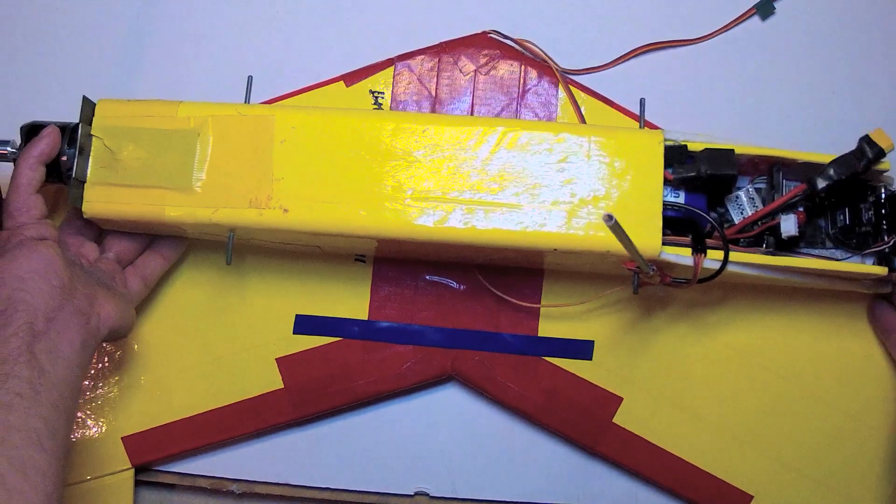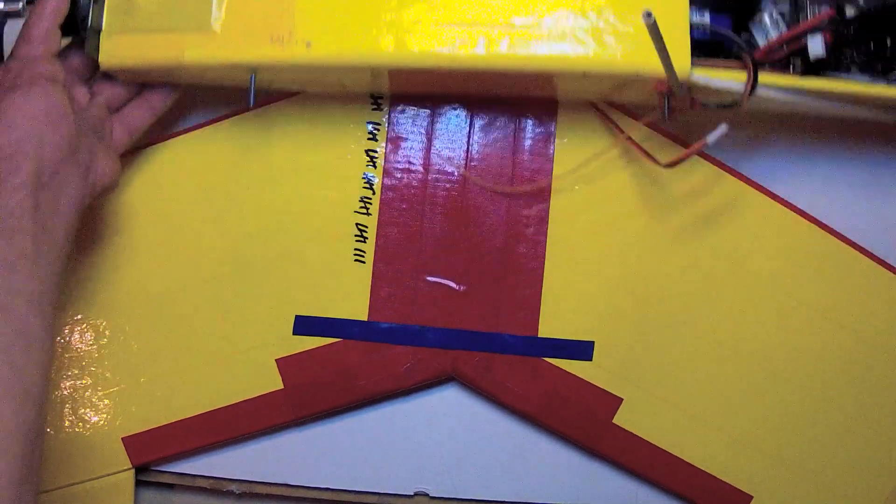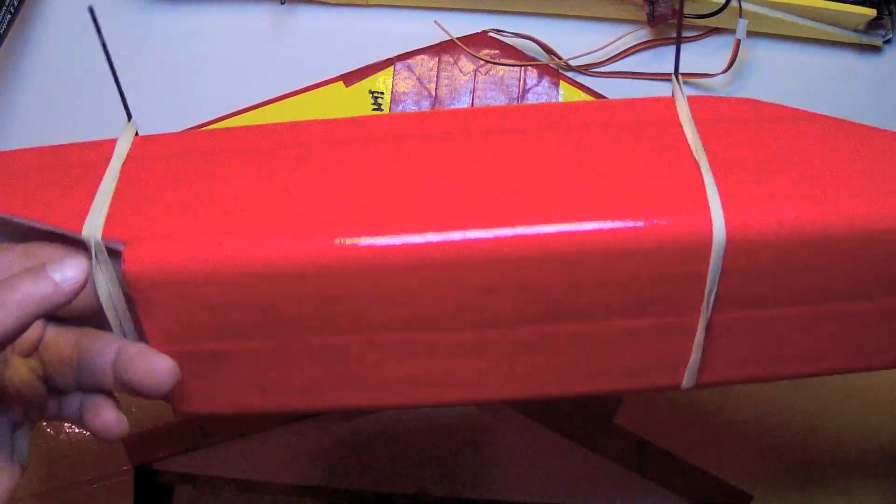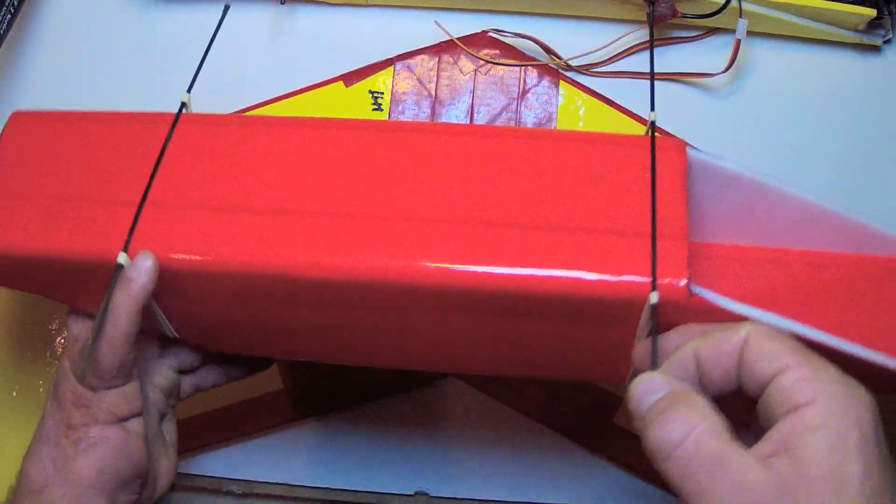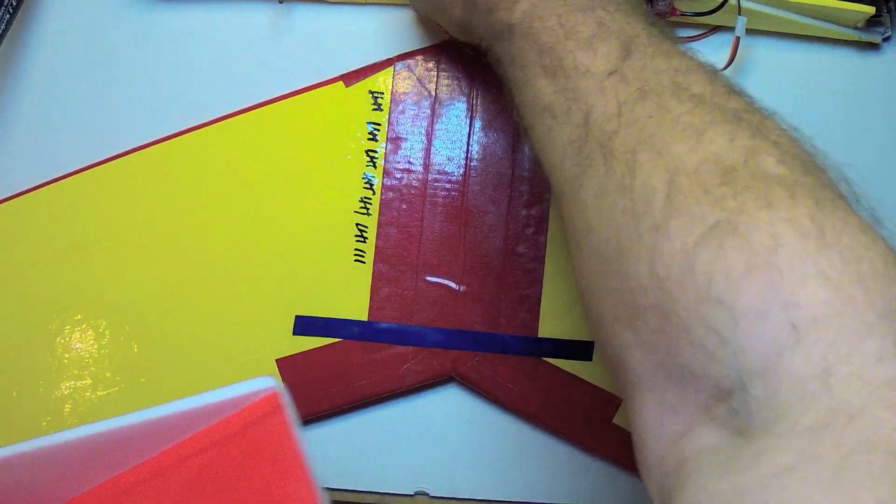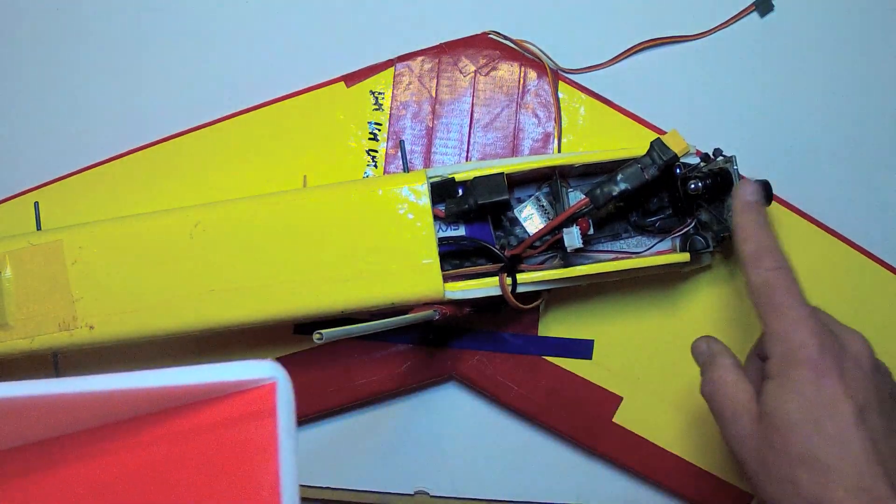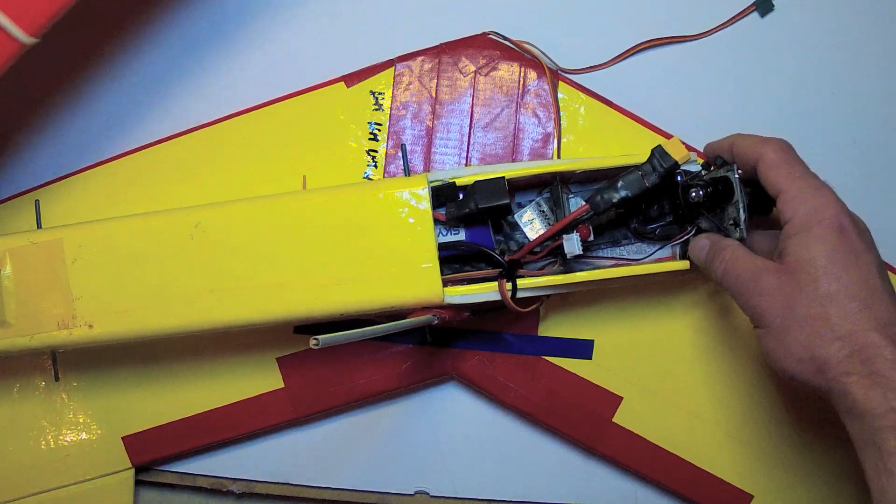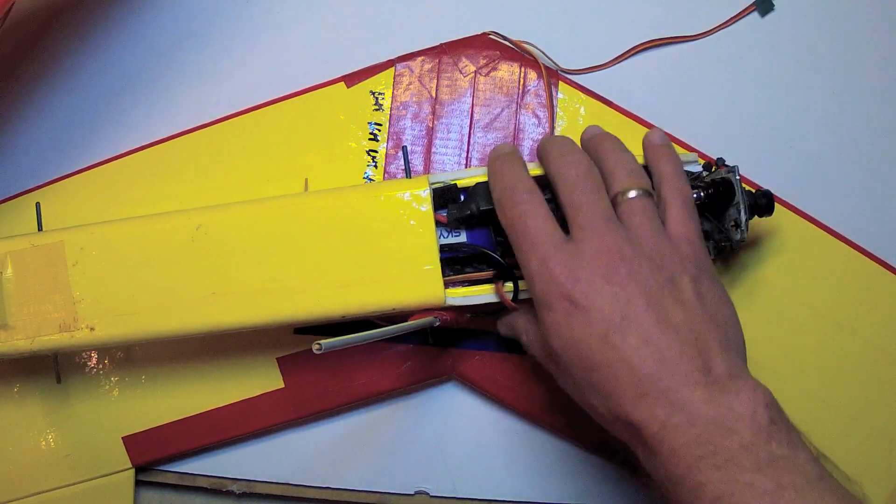Rather than just guessing where to install these wing tie down pegs, what I like to do first is rubber band on something - chopsticks, dowels, skewers, or carbon fiber to the fuselage fully loaded and I mean everything. If you're going to have FPV gear, install that, the battery, the receiver in its flight position, everything just as it's ready to fly.